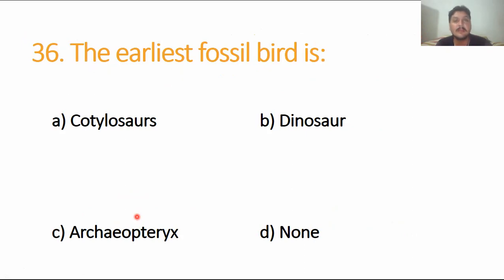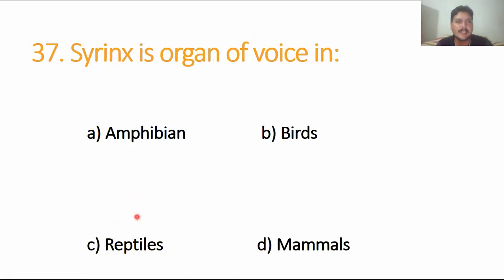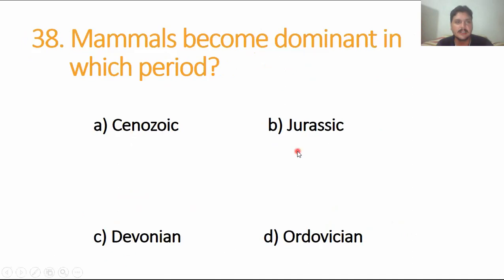Syrinx is the voice box in case of birds, because in mammals the voice box is called larynx. Mammals became dominant in which period? They are dominant in Cenozoic period. Cenozoic is the most recent era and this is the age of mammals.